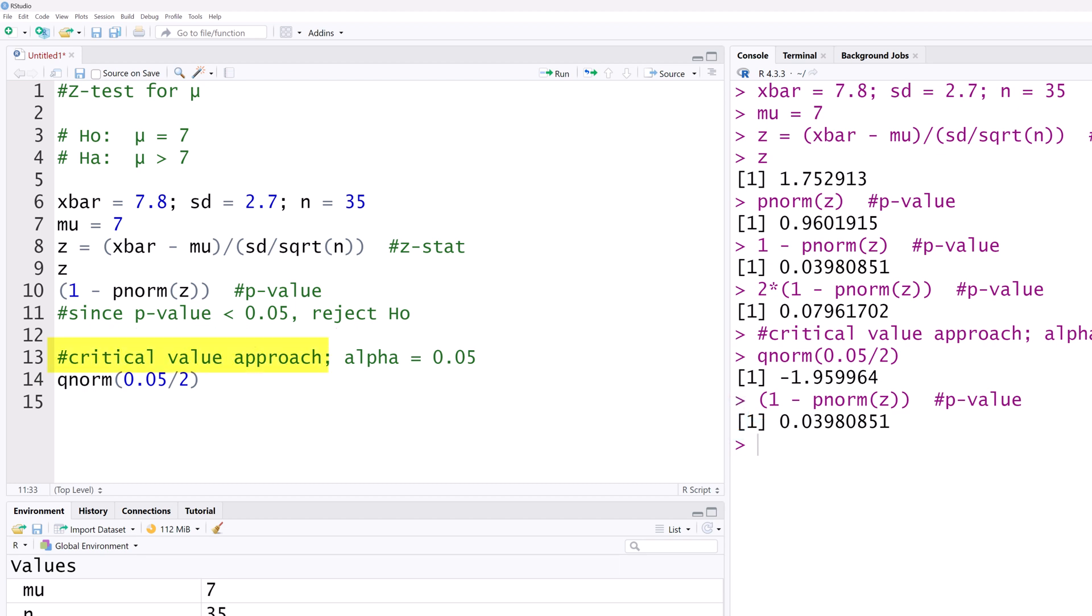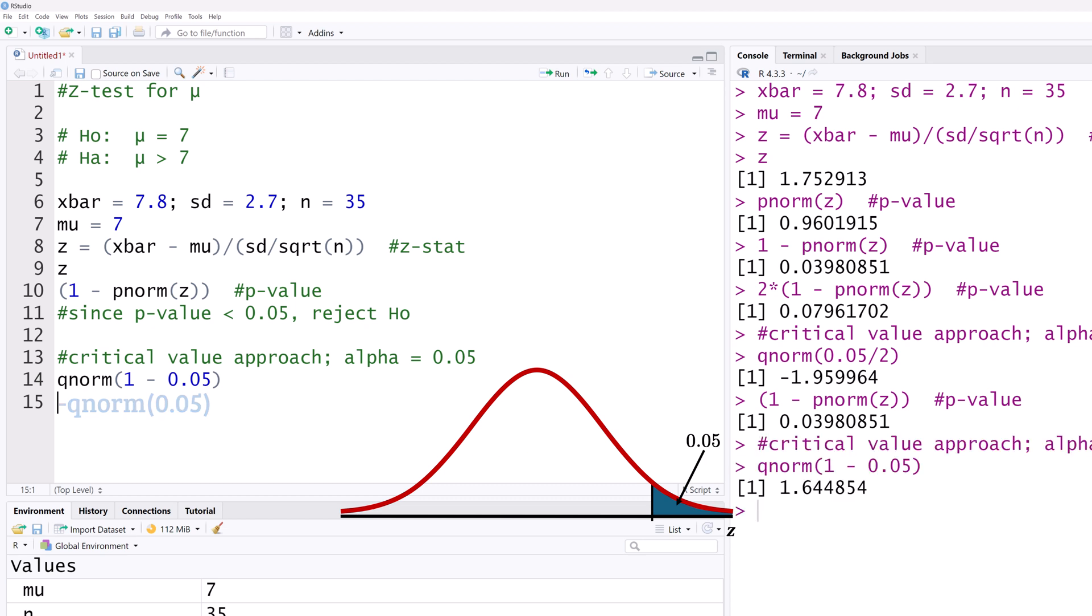For the critical value approach, alpha will only be in the right tail, since this is a right tailed test. The QNORM function primarily takes a less than area, so we will use 1 minus 0.05 to obtain a positive critical value. Or we could do negative QNORM 0.05. Running that, we have a critical value of 1.645.